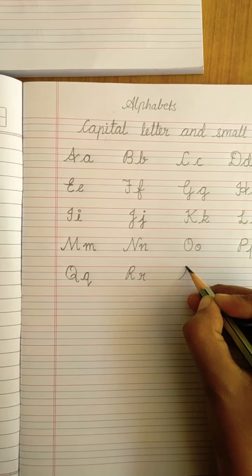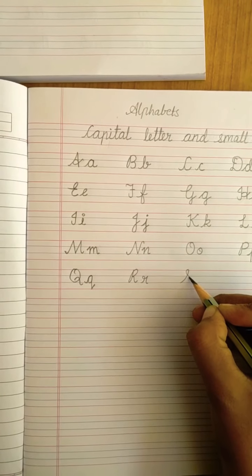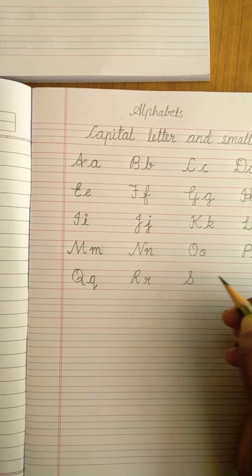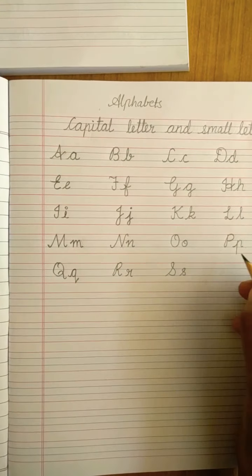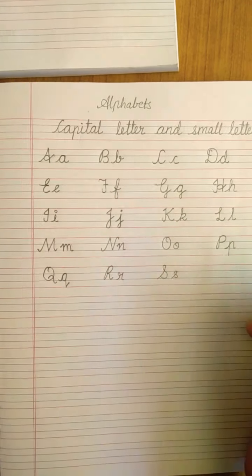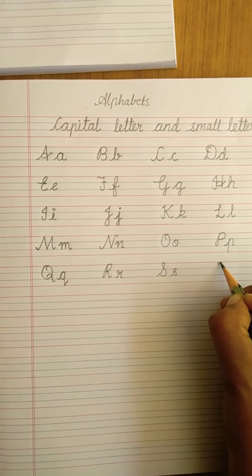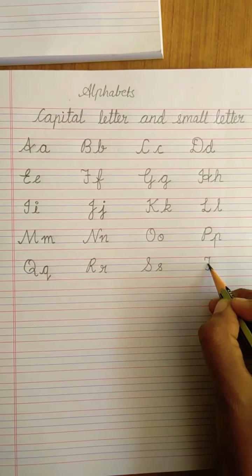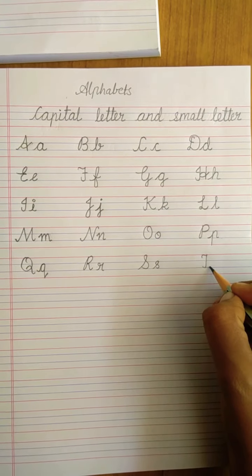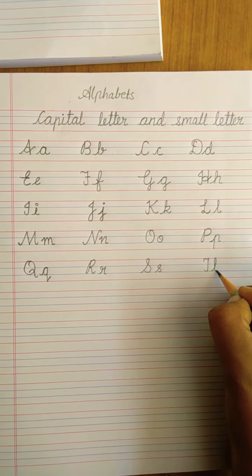Very easy to write S. Go up, back curve, come again, make a loop and S. In the same way small letter S. As we have written F, we will be writing T. But you are not going to give a dash. It's T. Capital T and small t.